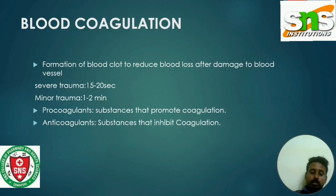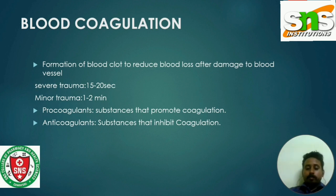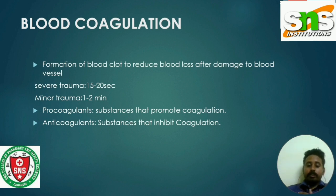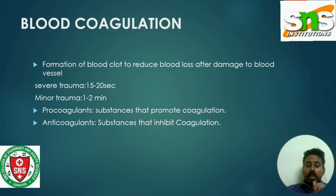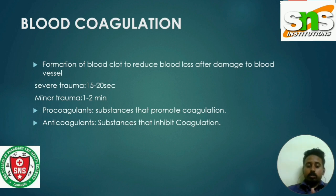Hemostasis, also known as hematostasis, is defined as a series of processes that stops loss of blood when blood vessels are damaged or ruptured. Blood clotting is reduced through three hemostatic mechanisms, one of which is blood coagulation, and the other two begin with vasoconstriction and platelet formation.